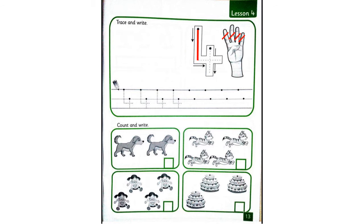From the dot, we go down straight. Move to the right and stop. From the big dot, we go down straight in the middle. Great job. Then you are going to trace number four. Then write it here.